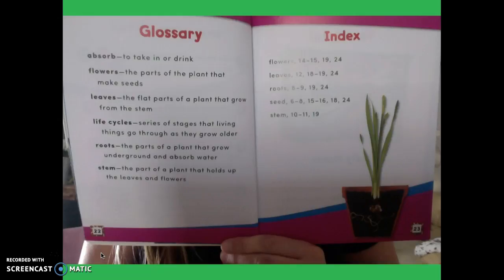That's the end of the book. On the back, you notice there's a glossary and an index. Boys and girls, you're going to get to make a glossary for your ranger journal. A glossary is a text feature that nonfiction books have to help you understand what a new word is. For example, if I wanted to know what life cycles meant, I could look in the glossary and I can read exactly what it means. Life cycles: Series of stages that living things go through as they grow older. Hmm, interesting.